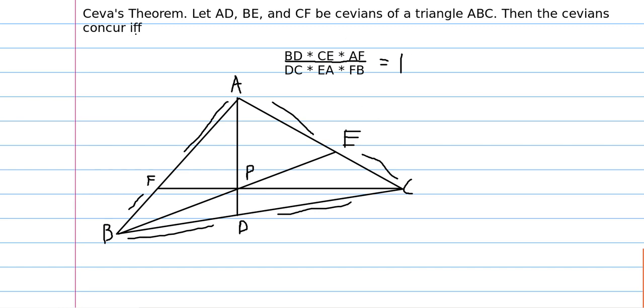So this is... notice this IFF, this stands for if and only if. So if the product of these ratios equals 1, then you know that the lines concur. And if you know that the lines concur, then you know the product of these ratios equals 1. So we can actually use barycentric coordinates to prove this result.